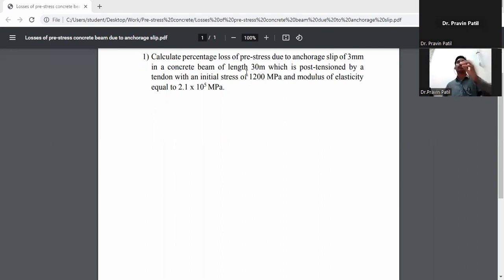Calculate the percentage loss of prestress due to anchorage slip of 3 mm in a concrete beam of length 30 meters which is post-tensioned by a tendon with an initial stress of 1200 MPa and modulus of elasticity equal to 2.1 × 10^5 MPa.